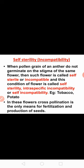The next condition which encourages cross pollination is self-sterility, also called as self-incompatibility. This means the pollen grains of one flower cannot fertilize the ovules of the same flower. That flower is called as self-sterile or incompatible. The condition is called as self-sterility, intraspecific incompatibility, or self-incompatibility. Examples are tobacco, potato, apple, etc. In these flowers, cross pollination is the only means for fertilization and production of seeds.